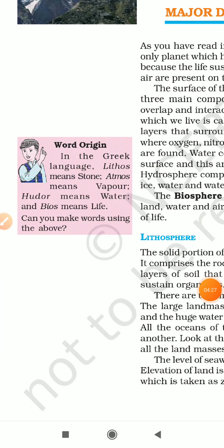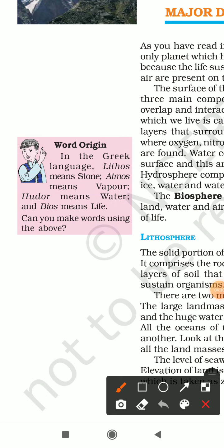Some important word origins: in Greek, 'lithos' means stone, 'atmos' means vapor, 'hudor' means water, and 'bios' means life.